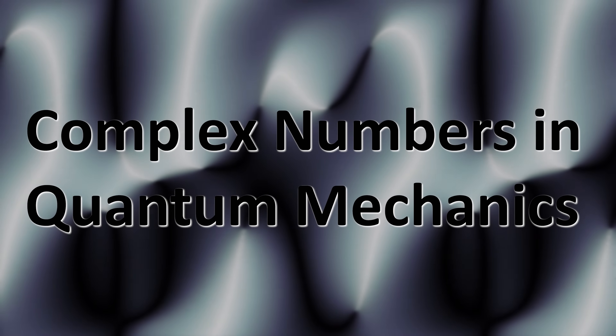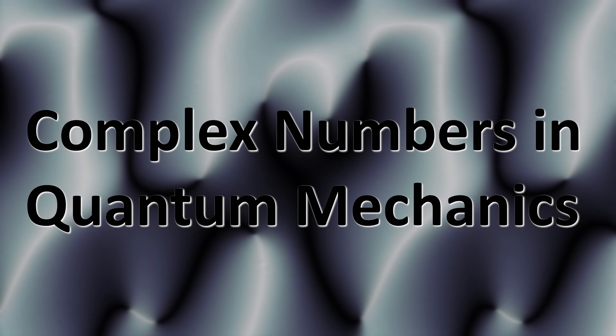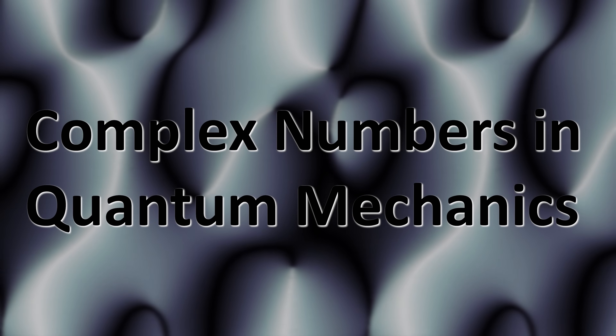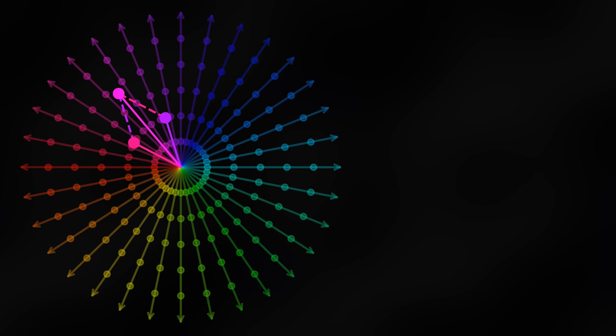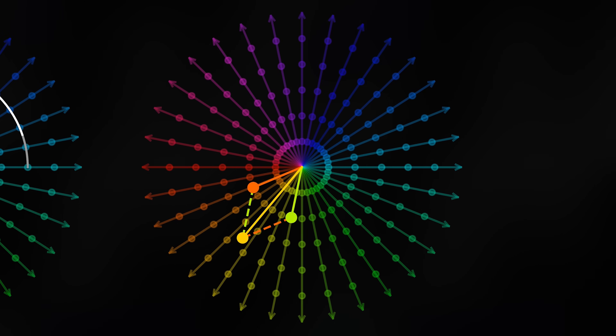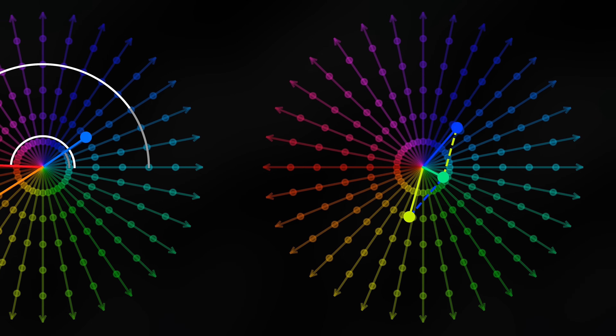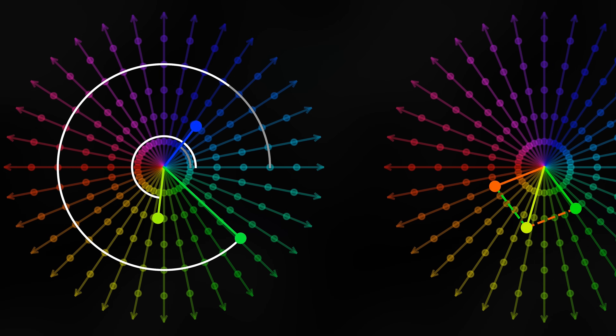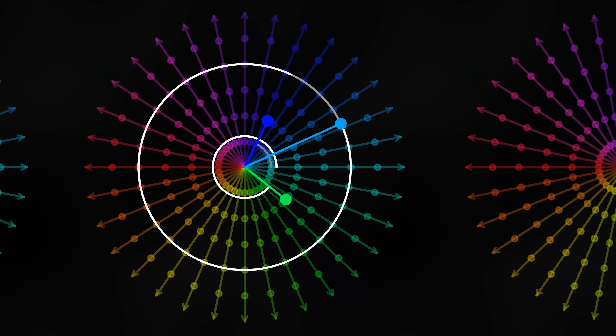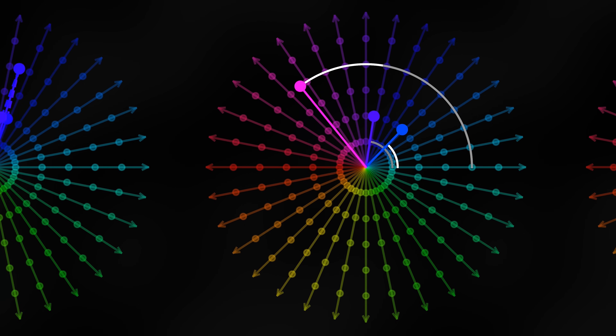Quantum mechanics is notoriously complicated and confusing, partly for good reason — there really are crazy phenomena in the quantum world. But one reason it's complicated is that complex numbers are all over the place. When you're getting into the subject, it's confusing why we use them, what they mean, why we can't use real numbers. That was a source of confusion for me for a long time, and then one day it clicked.